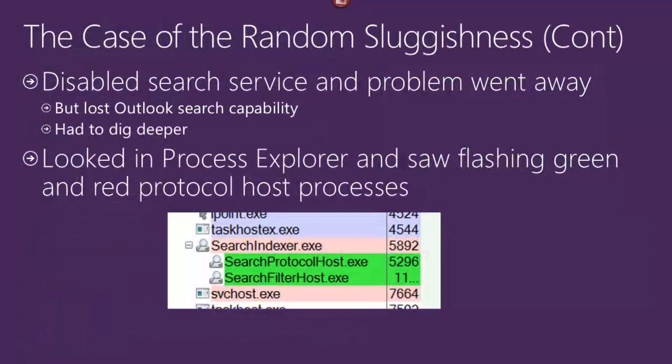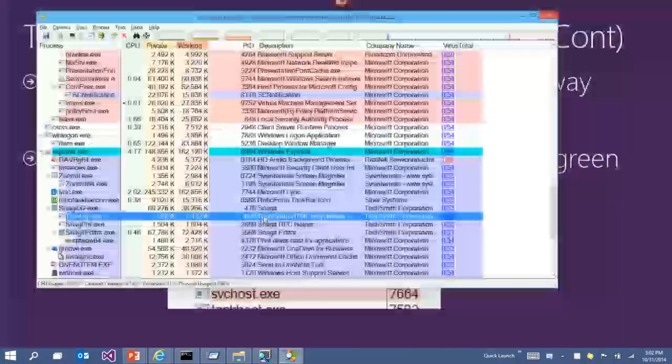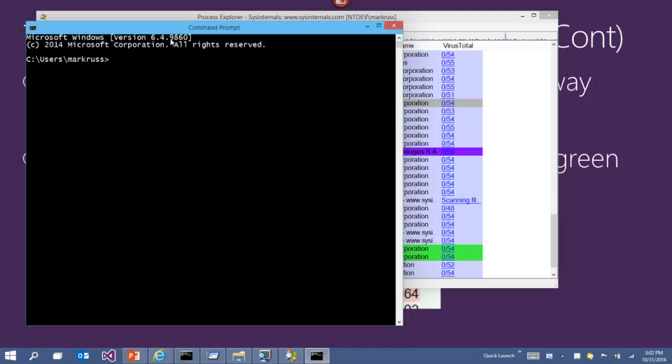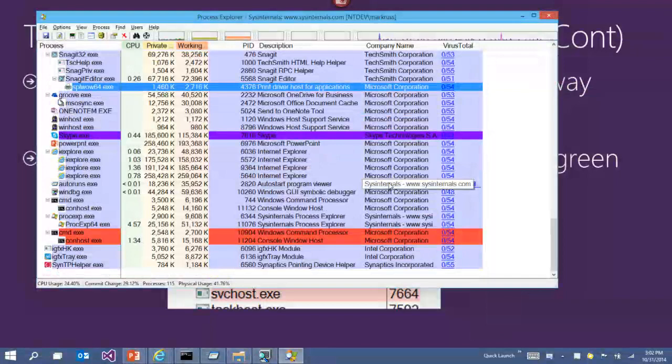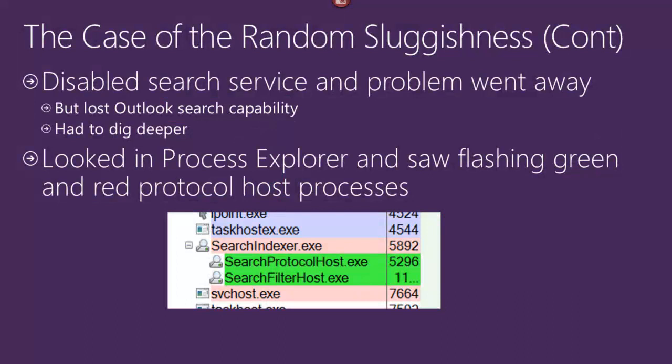Let's get back to the case of random sluggishness. He opened Process Explorer and saw a lot of flashing green and red. That's another highlight color in Process Explorer — green when a process is born, red when it's terminating — something very hard to see in Task Manager's flat process list. He saw search protocol hosts coming and going, obviously crashing and restarting over and over.